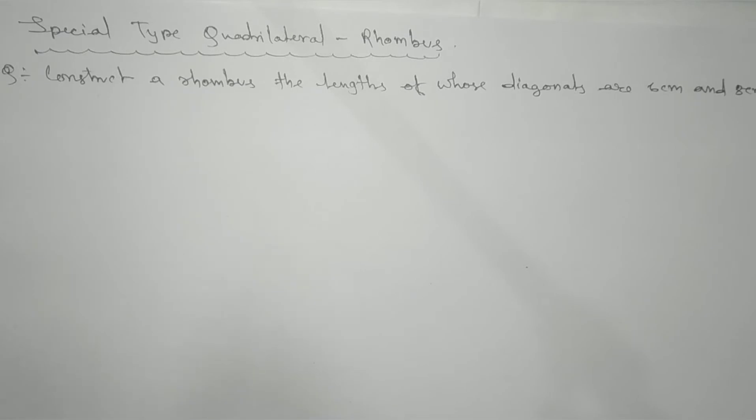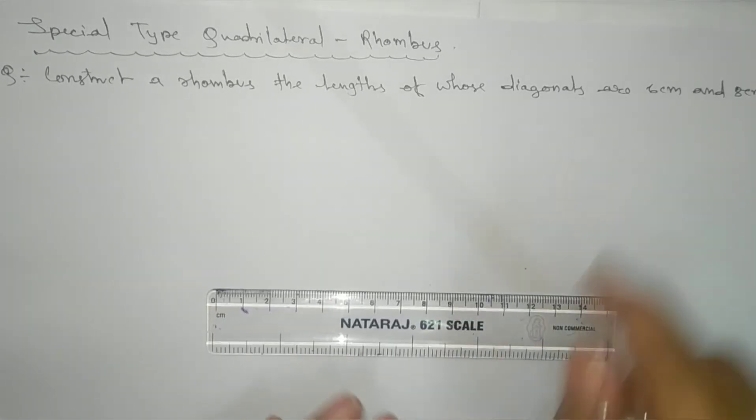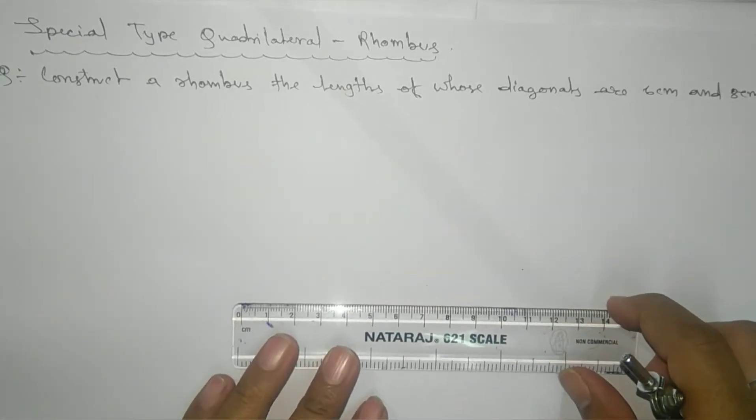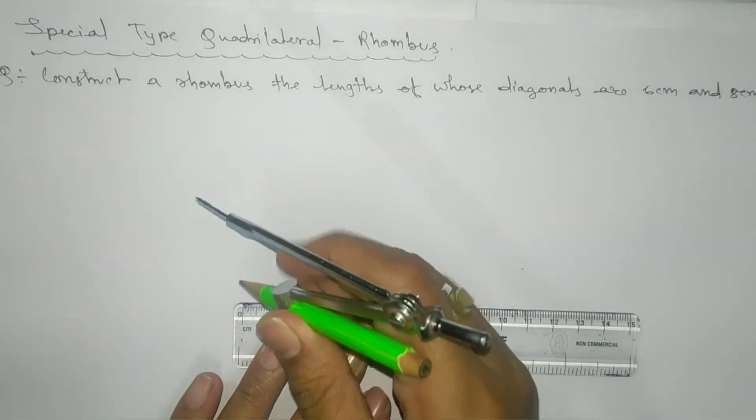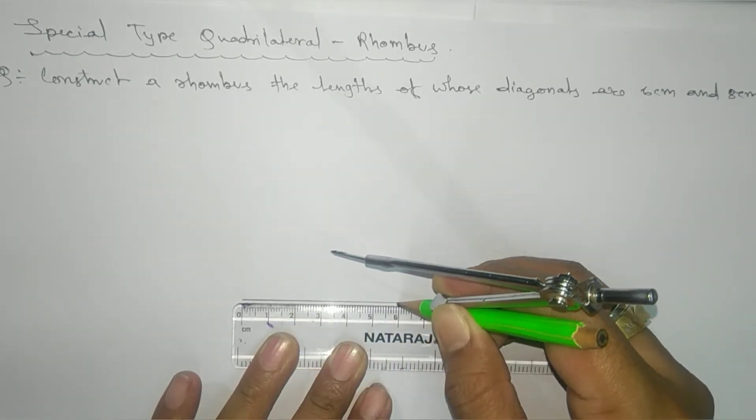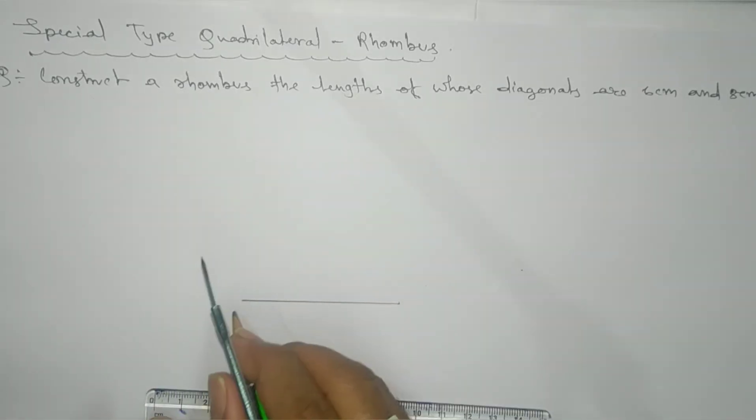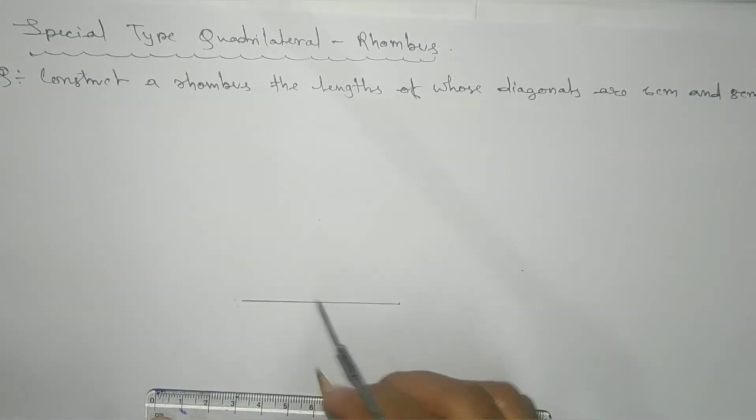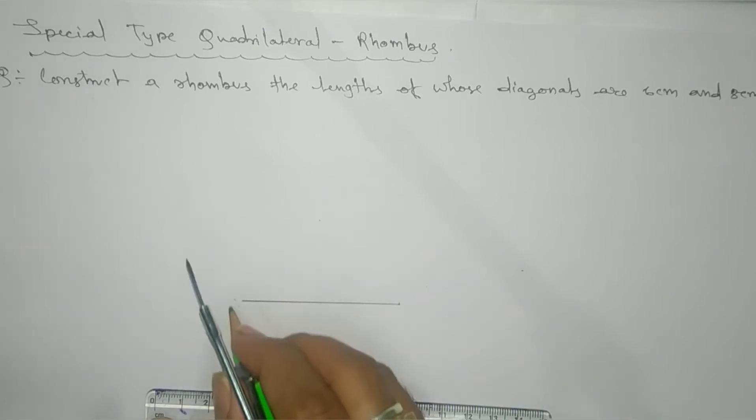The same concept we applied for square, similarly we'll use this concept. We'll take a diagonal as base. You can go for 6 centimeter or 8 centimeter, your choice. Let's take 6 centimeter as our base. We'll take this as 6 centimeter. If you go A, B, C, D like this, you can go for A and this is your C.